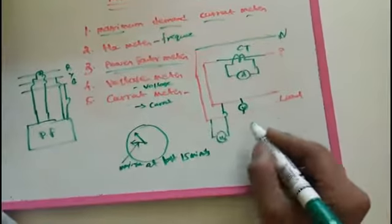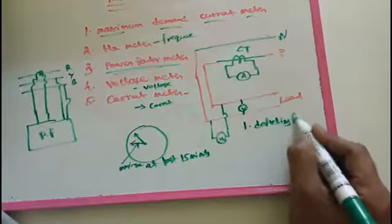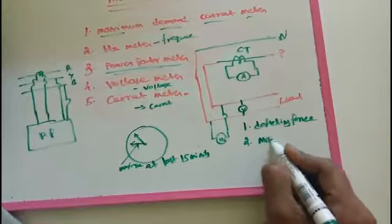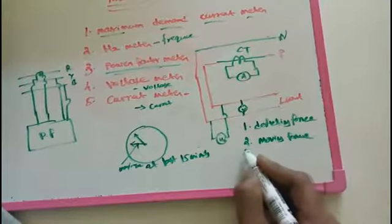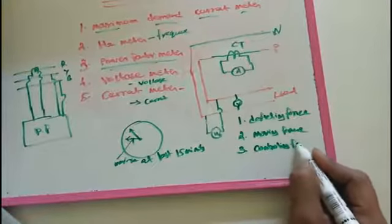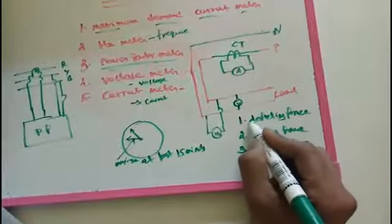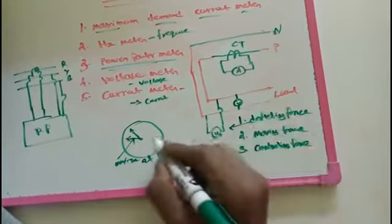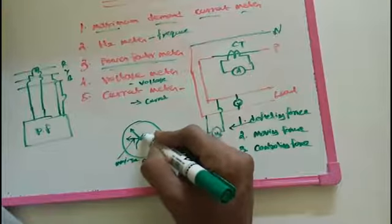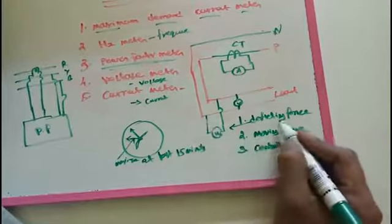The way a meter works relies on three forces. The first one is deflecting force, the second one is moving force, and the third one is controlling force. The deflecting force means the meter needs to move the needle from zero to some reading. When there is a reading, there needs to be a moving force — that force is what we call the deflecting force.